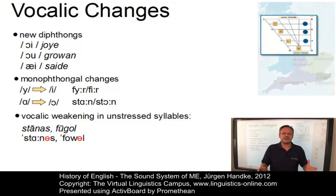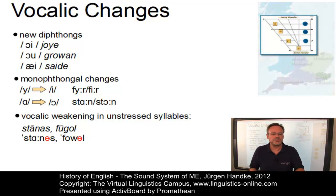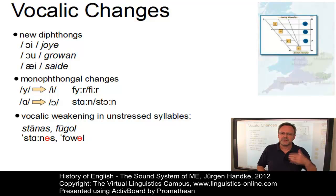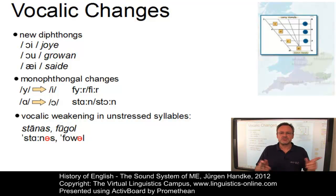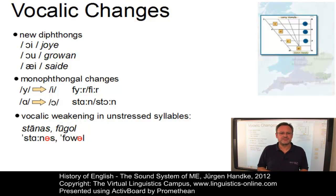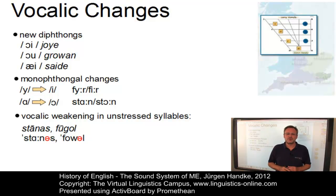Other phonological changes marking the transition from Old English to Middle English include the disappearance of the low front vowel ash /æ/, which became more centralized, and the monophthongization of most Old English diphthongs.